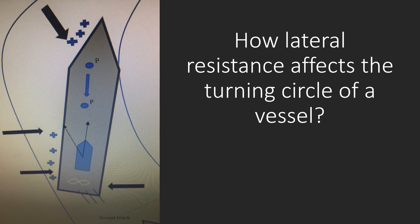Hi everyone. In today's video I am going to be talking about how the lateral resistance affects the turning circle of a vessel. I will explain what lateral resistance is, how it acts on the different parts of the vessel, how it affects the turning of a vessel in general, and then I am going to take the example of a loaded tanker in deep water approaching at a certain speed. By showing you drawings of the turning circle diagram, I will show you the impacts of the lateral resistance on the advance and the transfer, the drift angle, and the tactical diameter of a turning circle. To help with your understanding, I will use animations and explain the concept in stages.